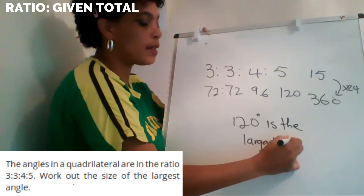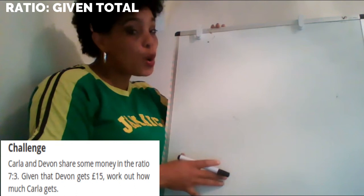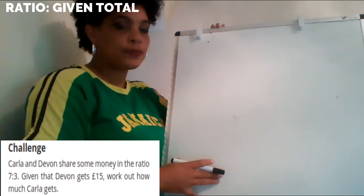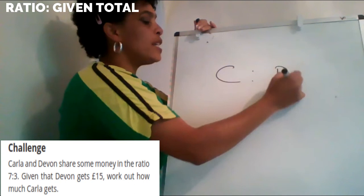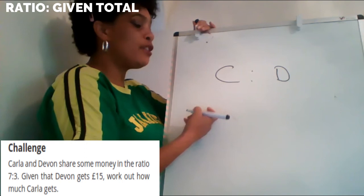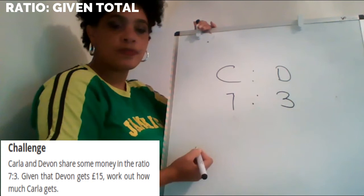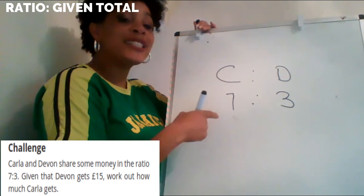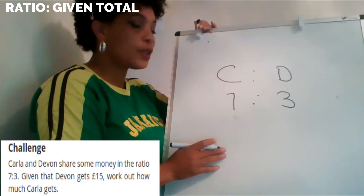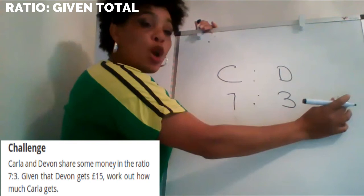I'm going to call this a challenge question. Pause the video, have a go, and come back. The question is about Carla and Devon. We're told they share some money in the ratio of seven to three, and that Devon got 15 pounds. Notice that in this question we're not told the total amount, so I'm not going to find the total number of parts. I put 15 under Devon.